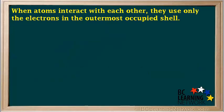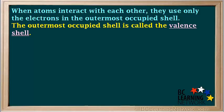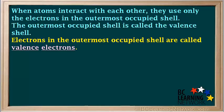When atoms interact with each other, they only use the electrons in the outermost occupied shell. The outermost occupied shell is called the valence shell, and electrons in the outermost occupied shell are called the valence electrons.